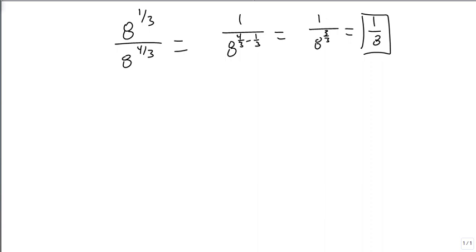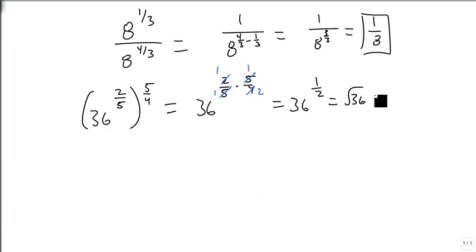A couple more examples. Suppose we have 36 to the 2 5ths raised to the 5 4ths. Well, this just means we get 36 to the 2 5ths times 5 4ths. We simplify our fraction, and we have 1s on top and a single 2 on bottom, so this becomes 36 to the 1 half. Same as the square root of 36, and we end up with just a 6.